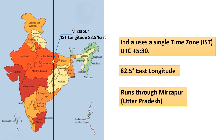India uses a single time zone called Indian Standard Time, which is UTC plus 5 hours 30 minutes. IST is calculated based on 82.5 degrees east longitude, which runs through the town of Mirzapur in Uttar Pradesh. Despite the wide longitudinal span, the entire country follows the same time zone.